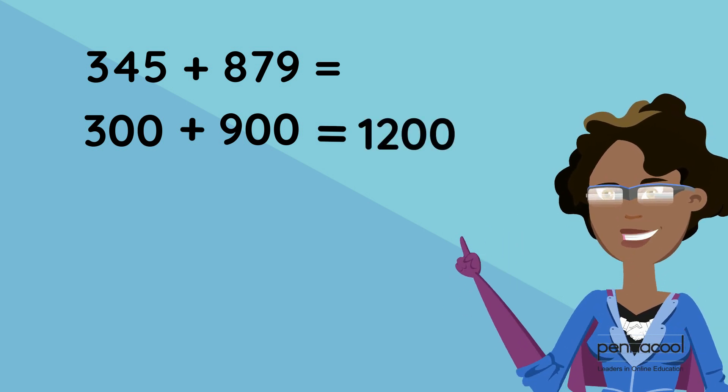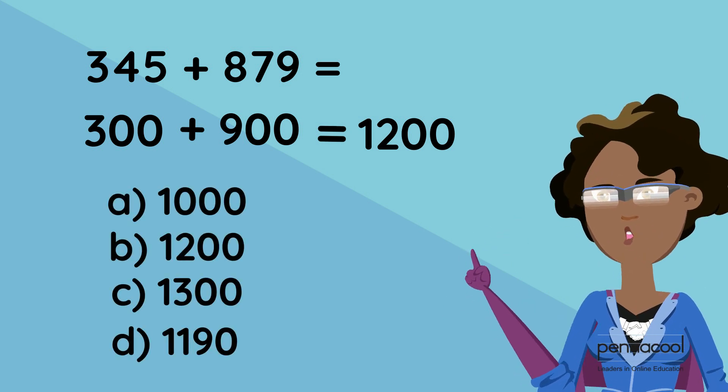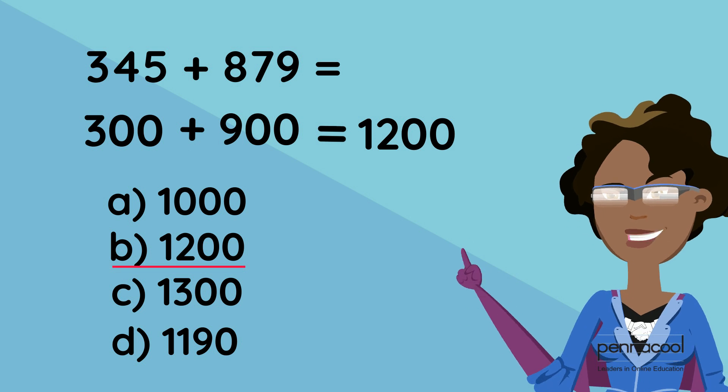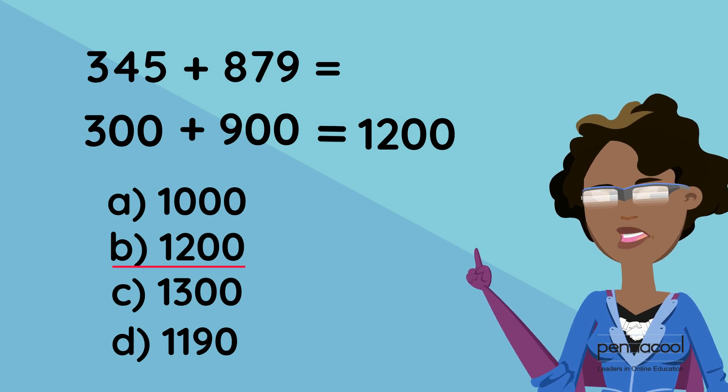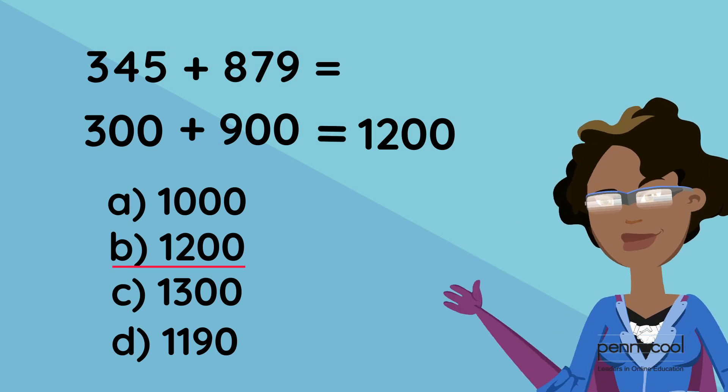So from our answer options before A, B, C, and D, the best answer we can use is B. Remember estimation is not the exact answer but the closest to. Don't forget your steps in order to correctly estimate your answer.